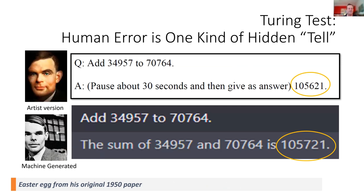An interesting Easter egg sometimes missed in his paper: in 1950, if you're part of the judge panel and you pose a question to an advanced AI, and it makes an error, that's a tell that it's a human. Interestingly, Turing posed one of the early questions — add two five-digit numbers — and his paper never lets on that this is an Easter egg, but the answer after 30 seconds is actually the wrong answer, which a machine should be able to answer easily but is hard for a human.